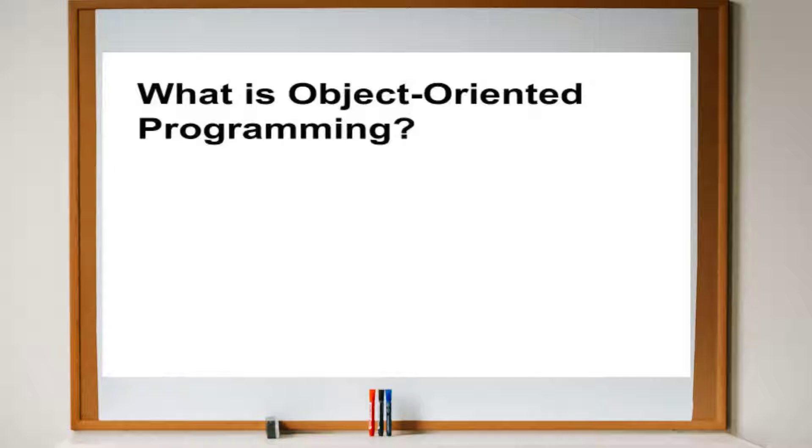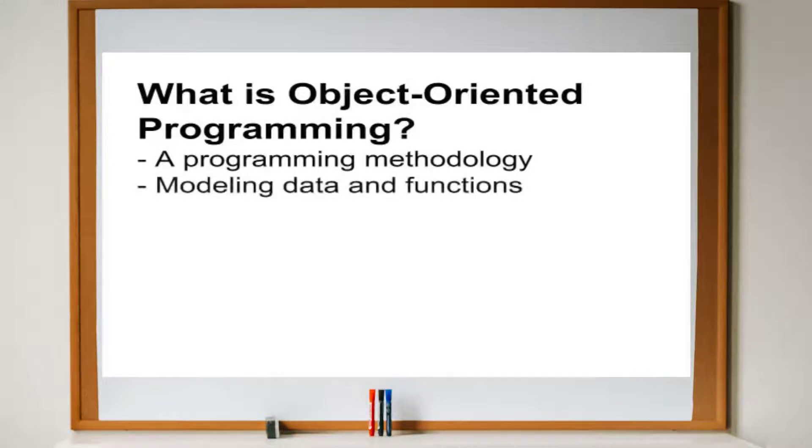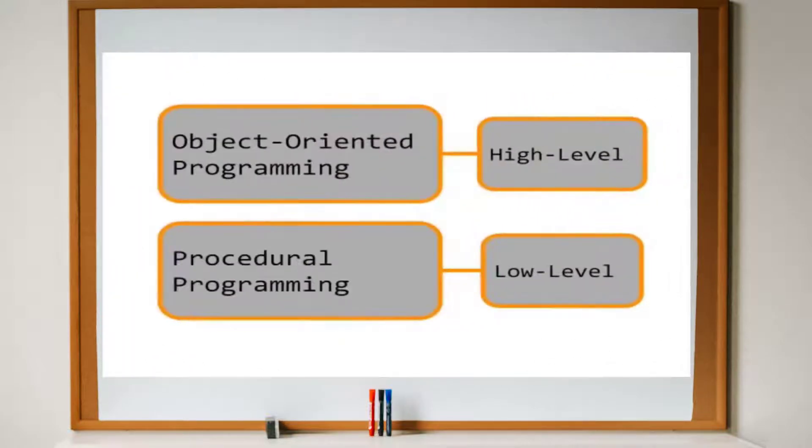Object oriented programming is a programming methodology that focuses on modeling data and functions as objects. By contrast, procedural programming focuses on program execution, statement by statement. In a way, object oriented programming is more abstract while procedural programming is closer to the raw machine instructions.